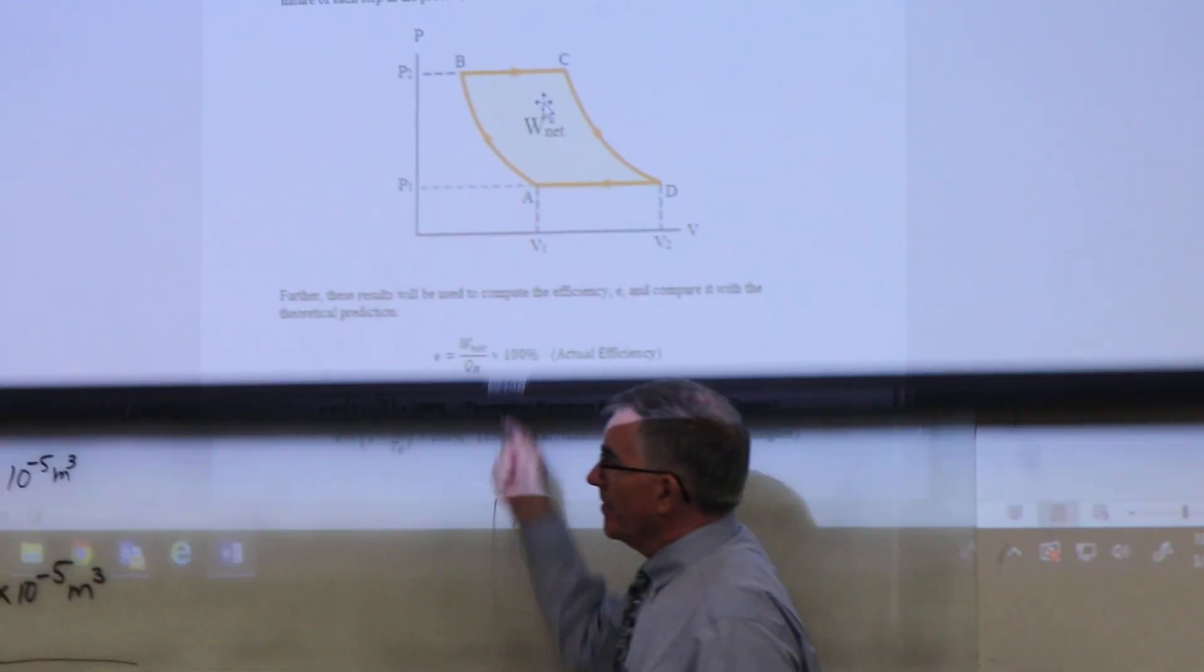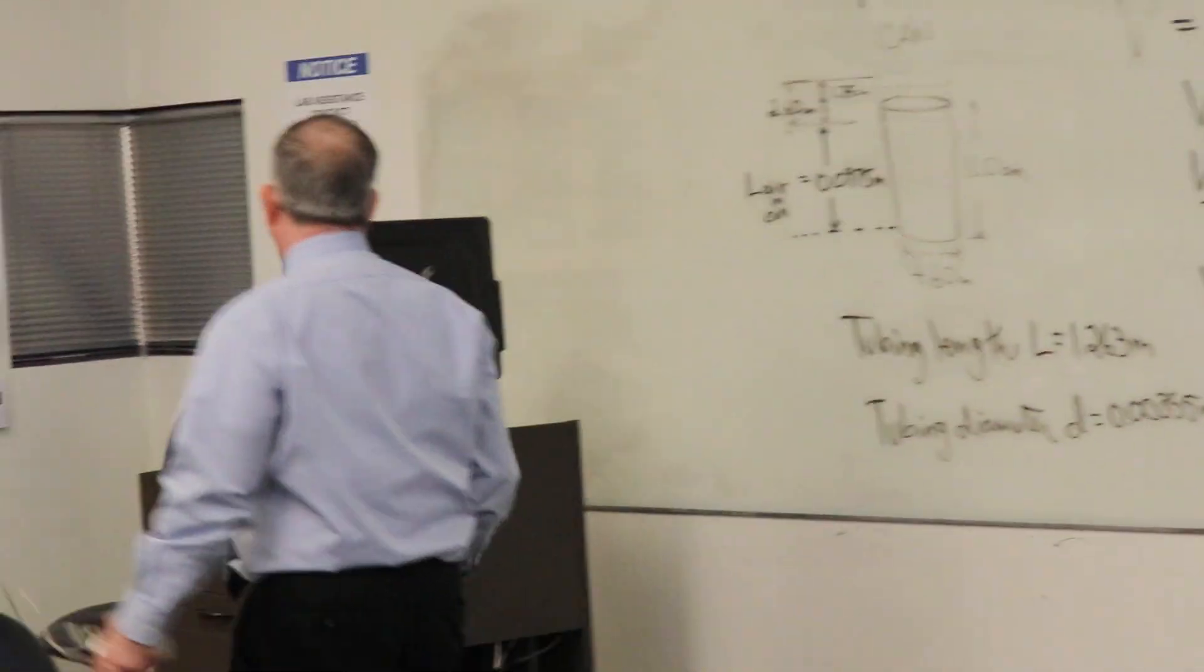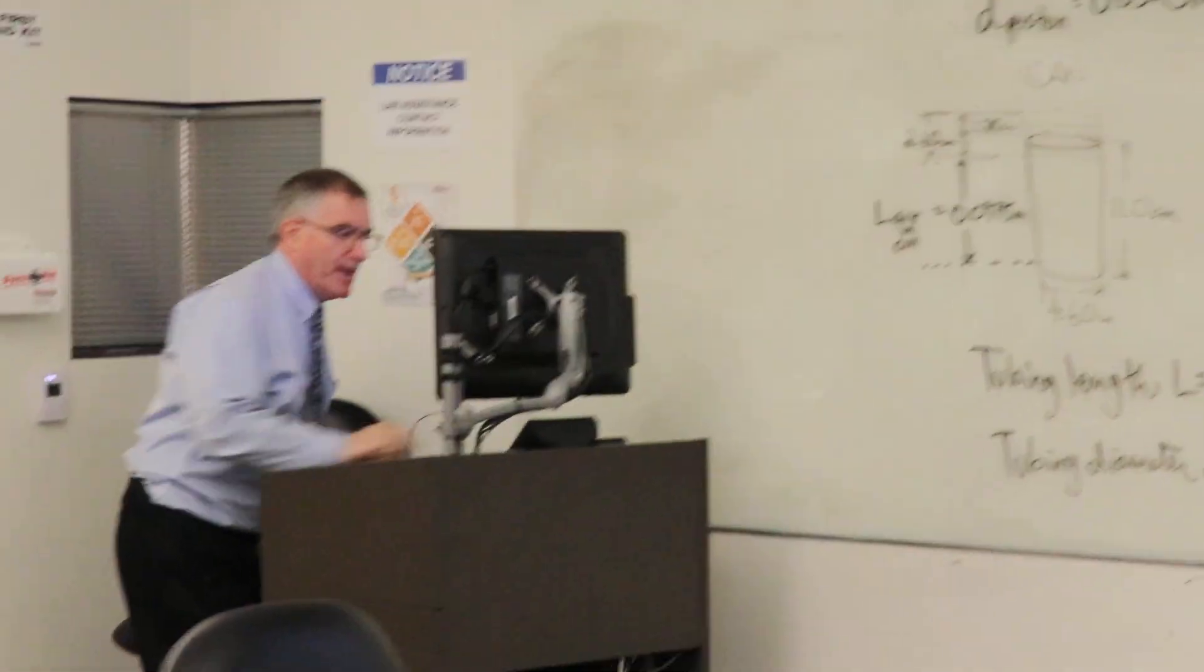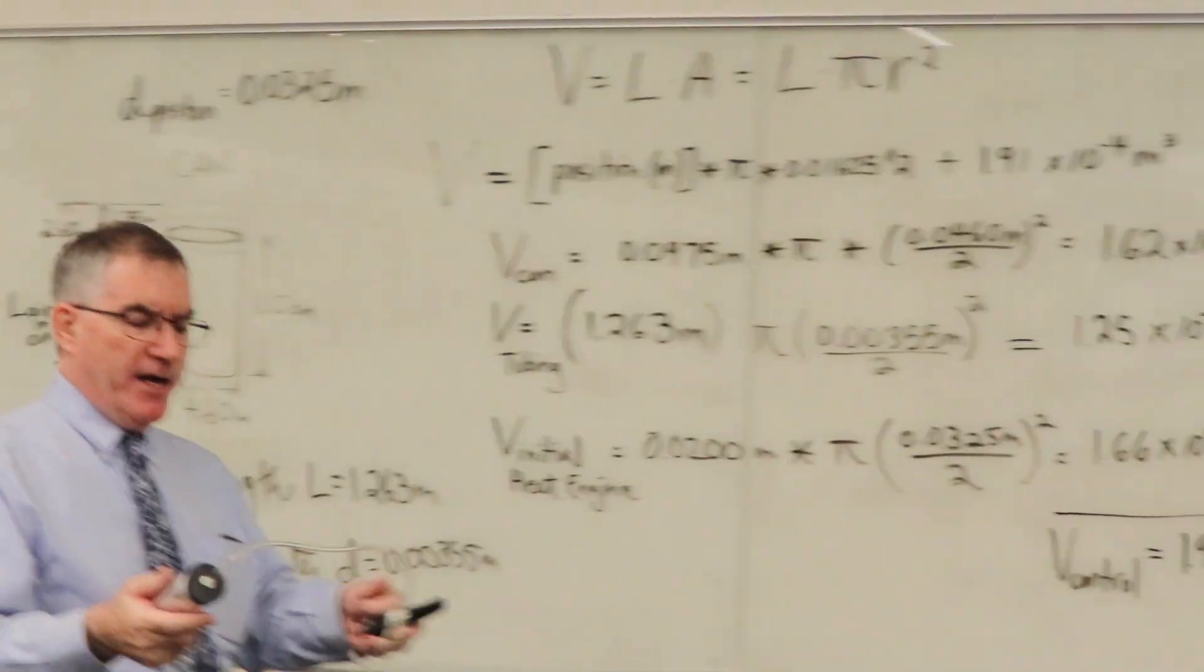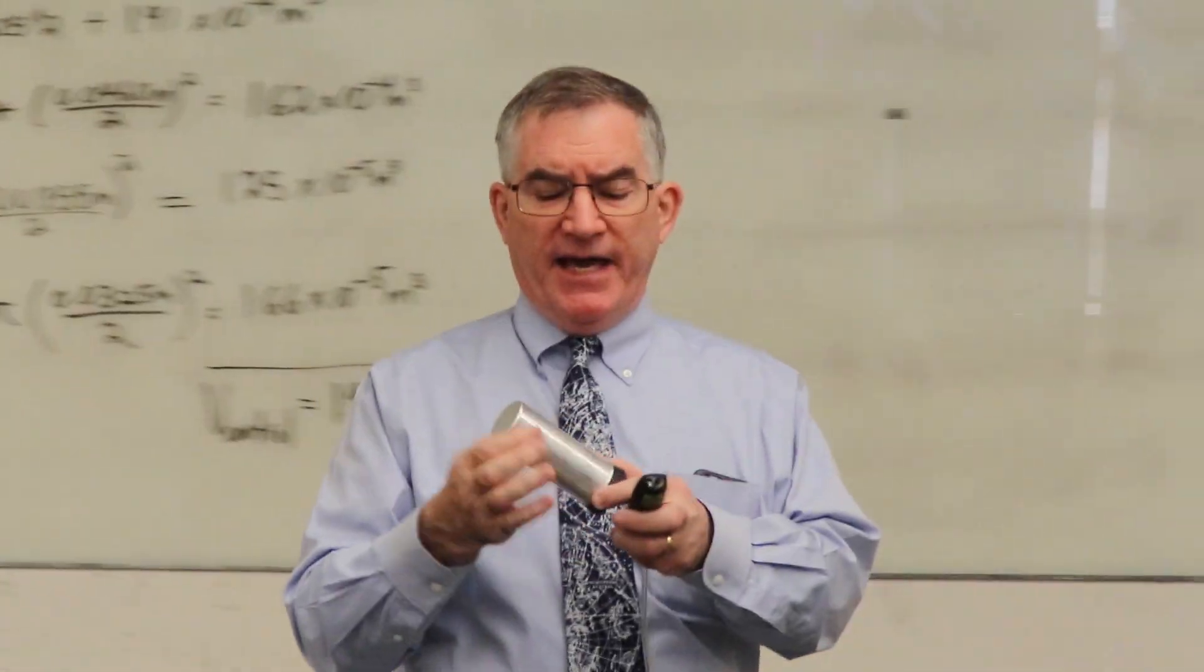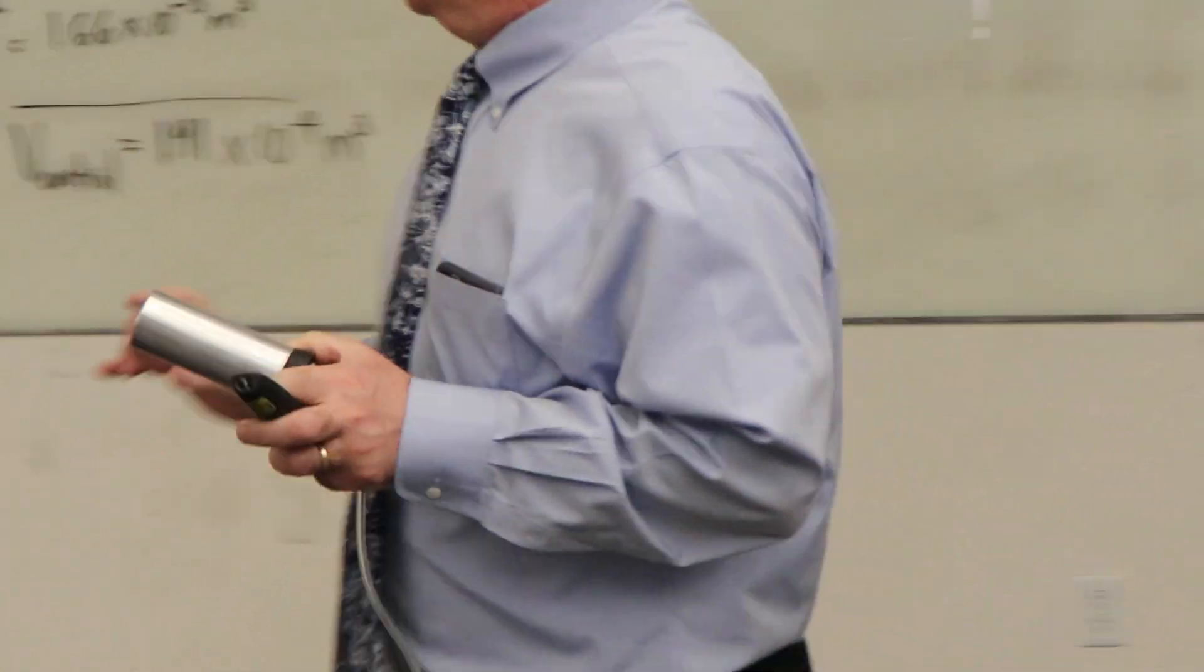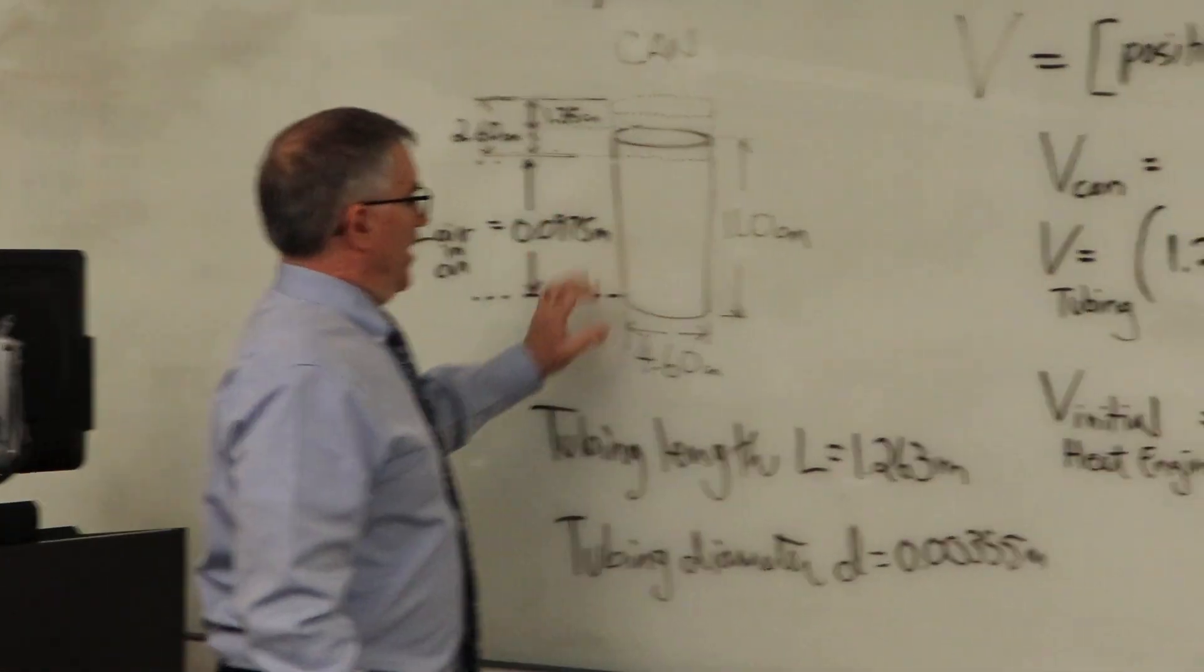So I'm going to turn this off, and I want you to look at some of the data that we have to take before we actually do the experiment. There's a bunch of measurements you have to make. And this can right here, you need to measure the volume of the can, so you need to get the diameter of the can and the length of the can.